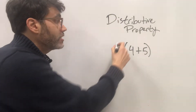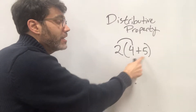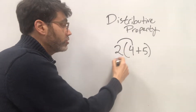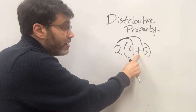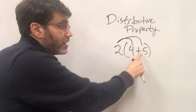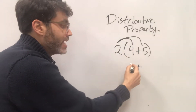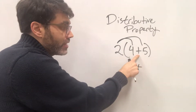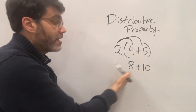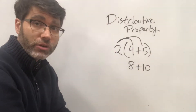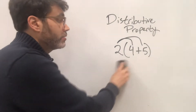The distributive method says that you're going to multiply whatever's on the outside — in this case 2 — times everything individually that's on the inside. So 2 is going to be multiplied by 4, and then 2 is going to be multiplied by 5. Whatever operation is inside the parentheses, we bring down as well. So 2 times 4 is 8, we keep our addition sign, and then 2 times 5 is 10. And 8 plus 10 is also 18 — the same answer as with PEMDAS.